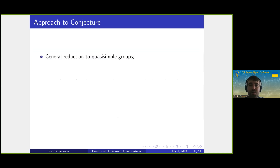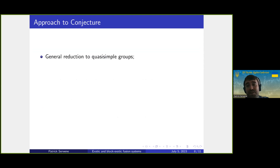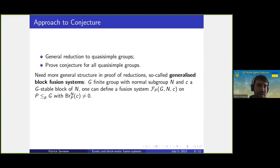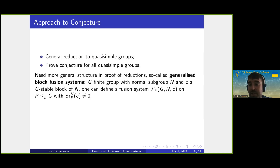Let's say a few words about how we would want to prove this conjecture. We would like a general reduction to quasi-simple groups. We have some reductions to quasi-simple groups but they are always very specific, and at some point we will probably need to use the classification of finite simple groups to prove the conjecture for all blocks of quasi-simple groups.